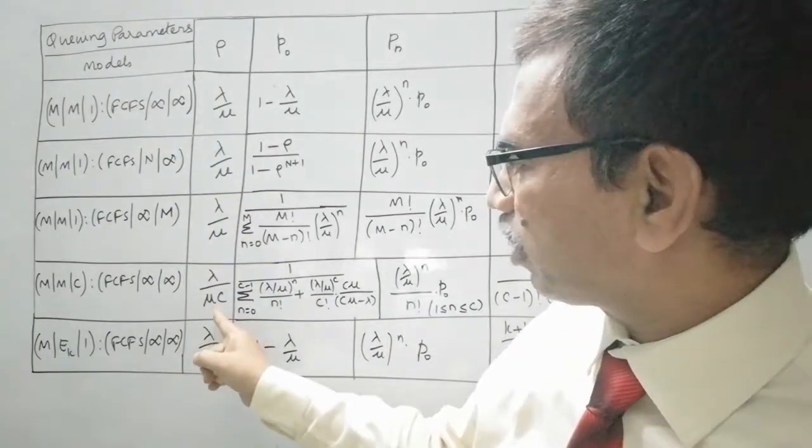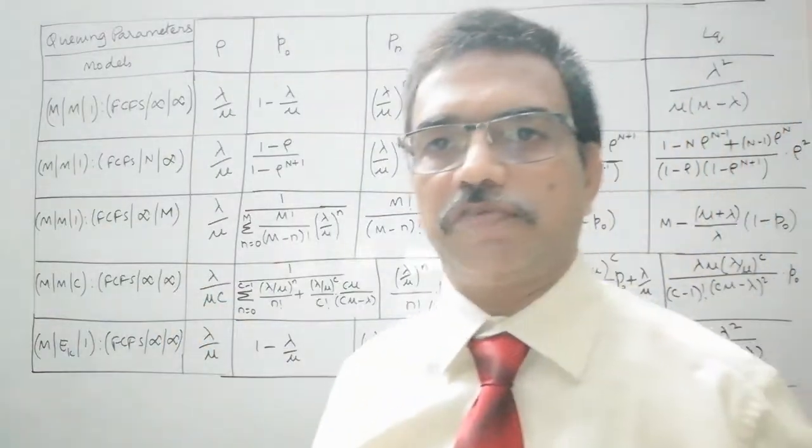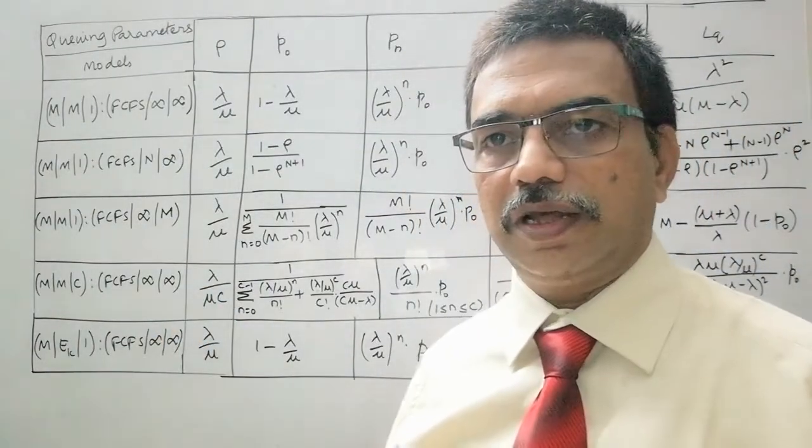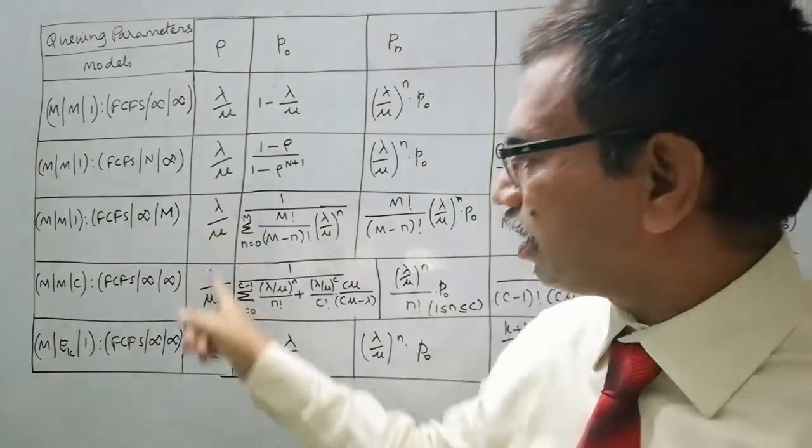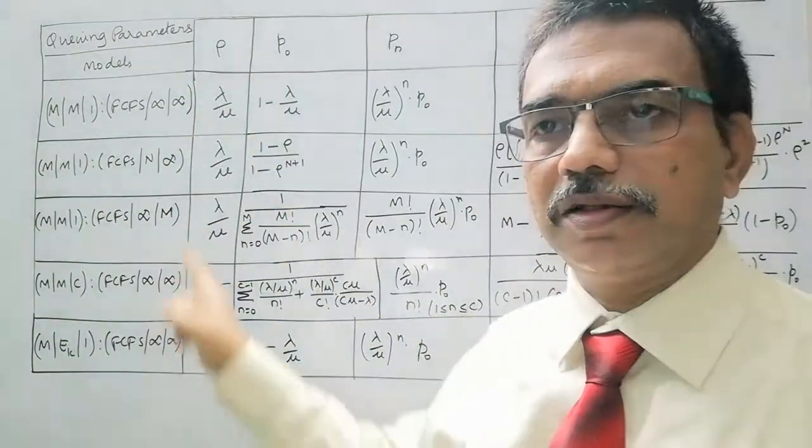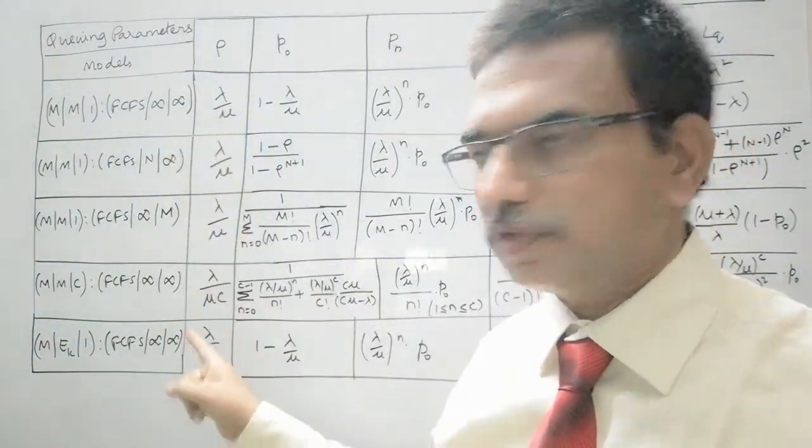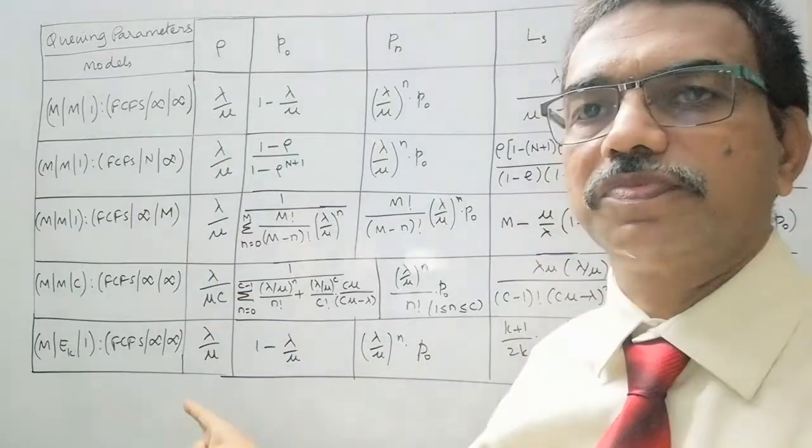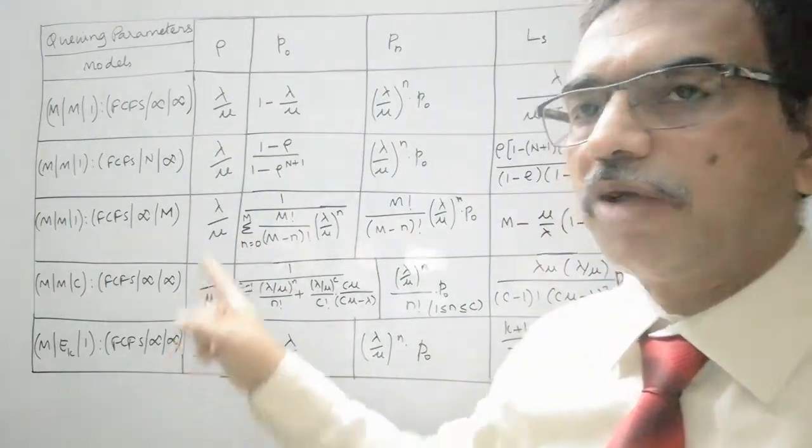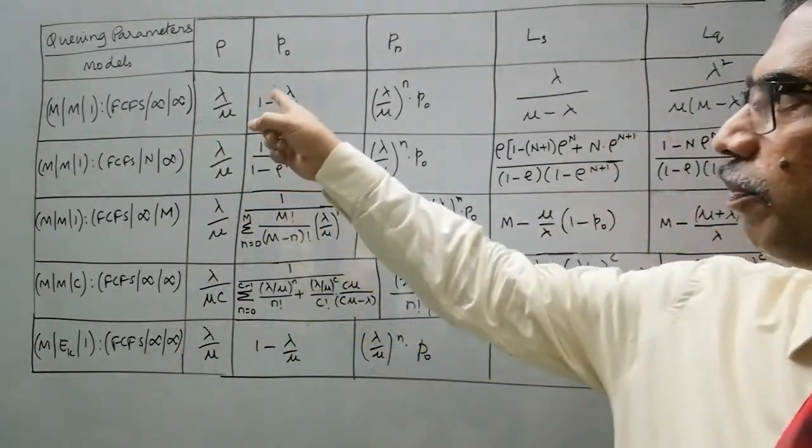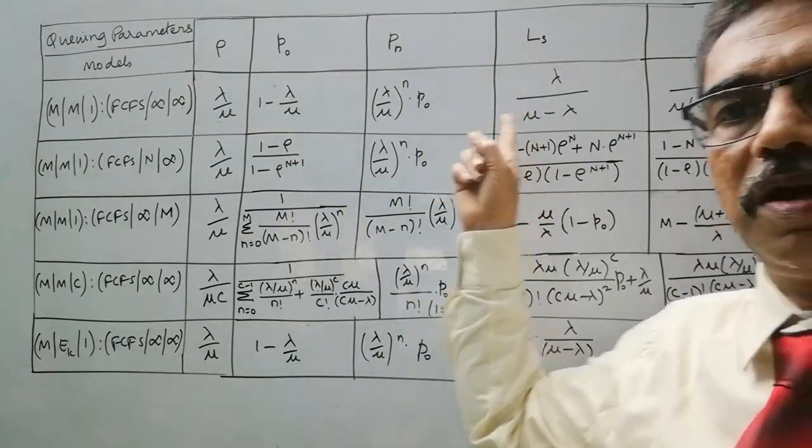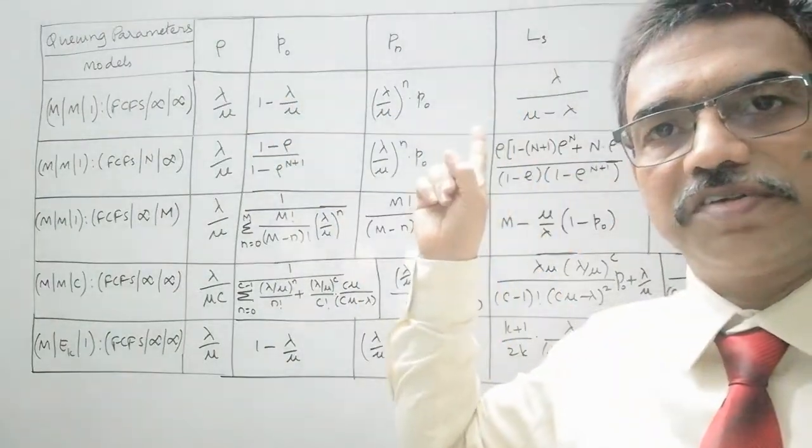Now if you observe, for all models except the multi-server model, ρ is λ/μ. And for this particular model, it is λ/(μc), where c is the number of servers. So one can easily remember the expression for ρ if we list out like this. The formula for all the single server parameters of single server model have been derived, I have given derivations in some other video.